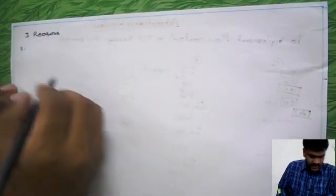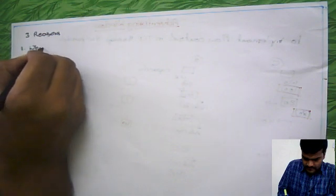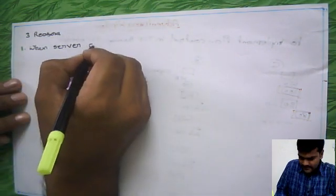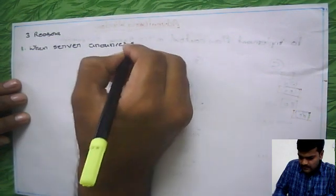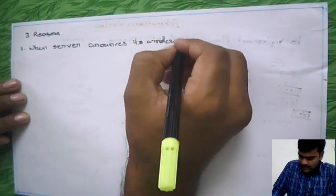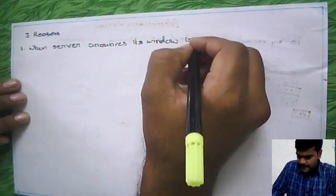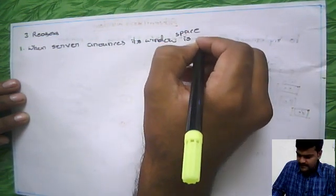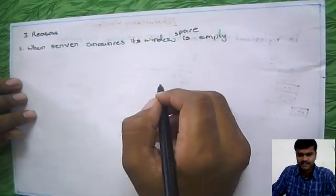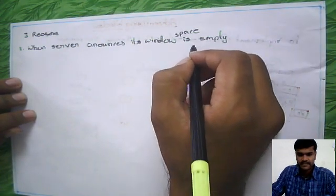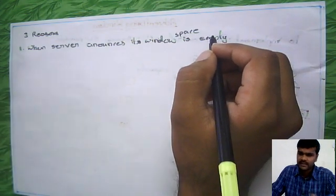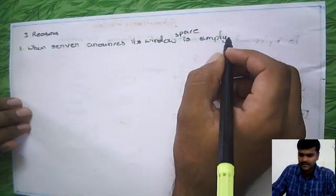First one is when server, when server announces its window, its window space, its window space is empty. Okay, this is simply like in earlier case what we see. Whenever server space is empty in the window, in receiver side, so obviously you are going to set the window size as 1 in the sender side. So this is one of the reason whatever we seen earlier.